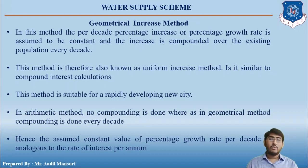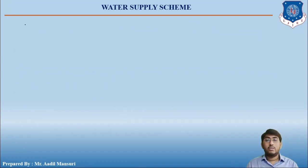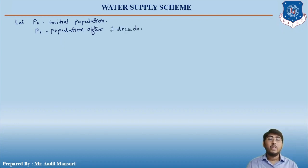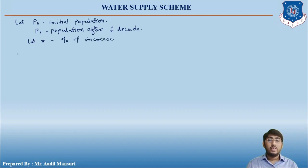Let us look at how the formula is derived. Let P0 be the initial population and P1 be the population after one decade. Let r be the percentage of increase.